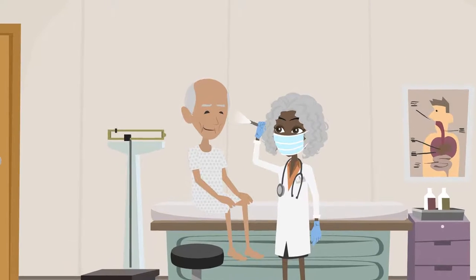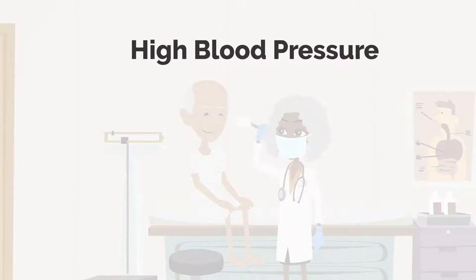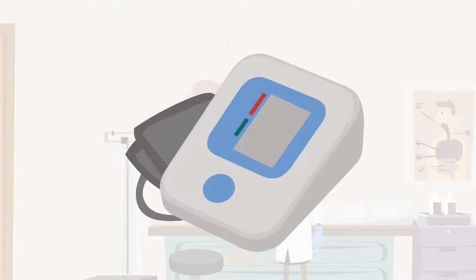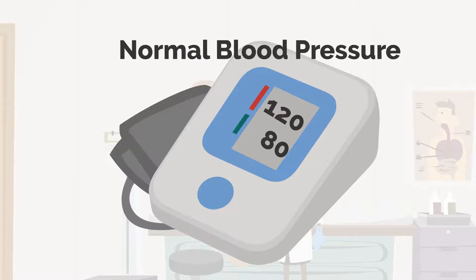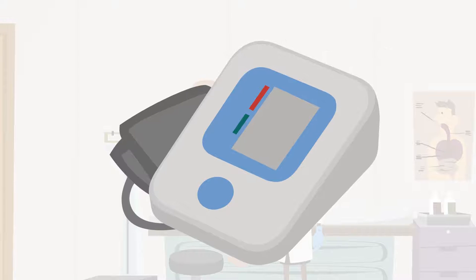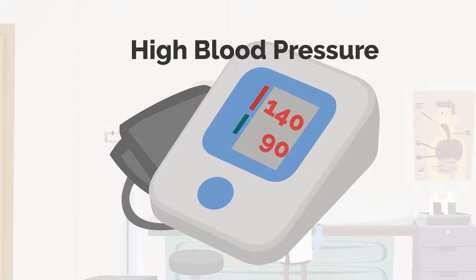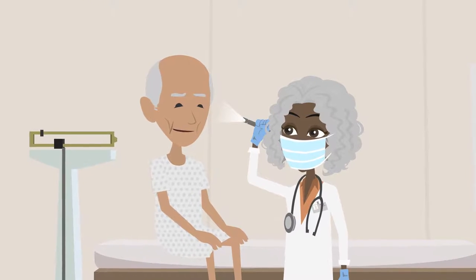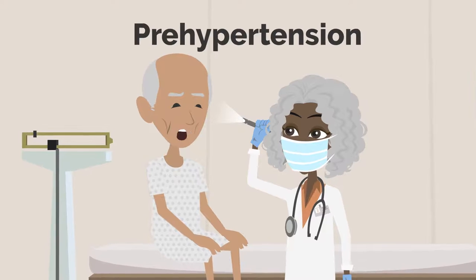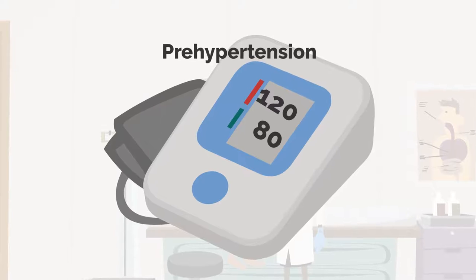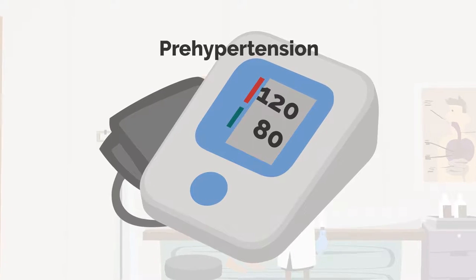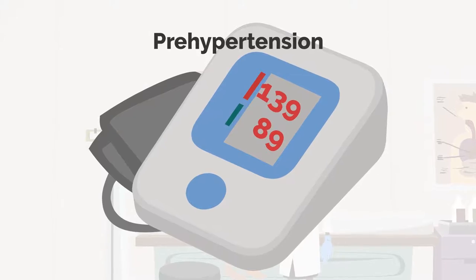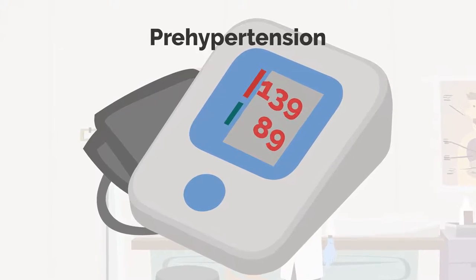Hypertension is also known as high blood pressure. Normal blood pressure is defined as being below 120 over 80. Hypertension occurs when the blood pressure reaches above 140 over 90. The risk for hypertension is increased in a condition known as pre-hypertension, which occurs when the blood pressure is between 120 over 80 and 139 over 89.